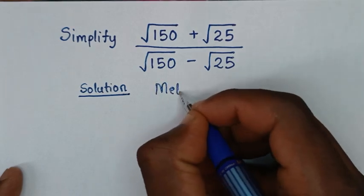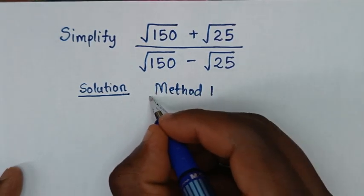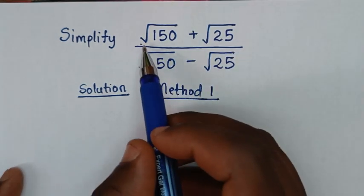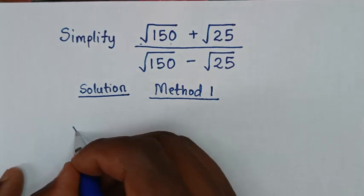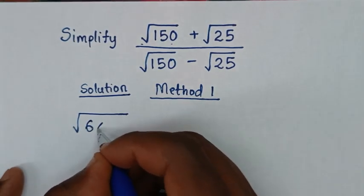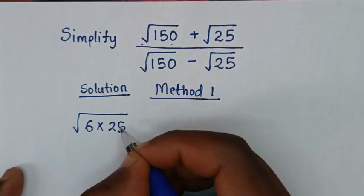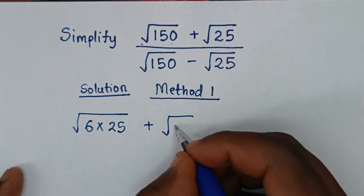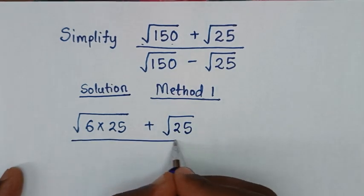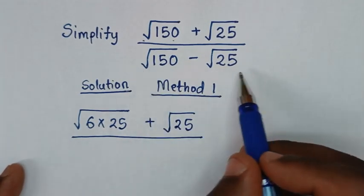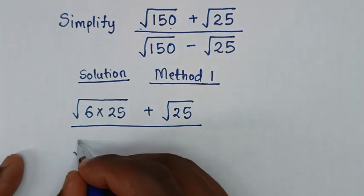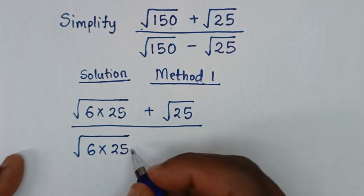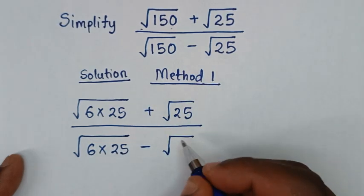So let's call this Method 1. In the numerator, this square root of 150 is the same as square root of 6 times 25. We want to make square root of 25 common, then plus this square root of 25. Then over, in the denominator, square root of 150 is the same as square root of 6 times 25, then minus this square root of 25.